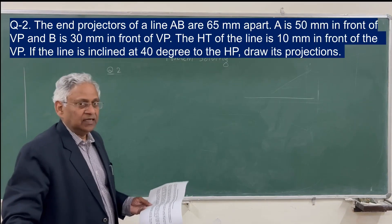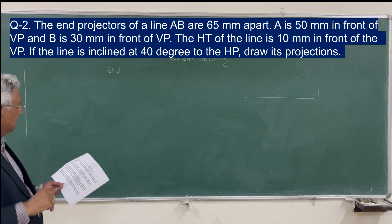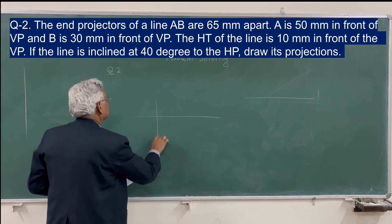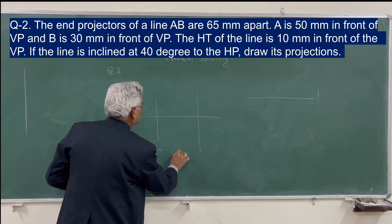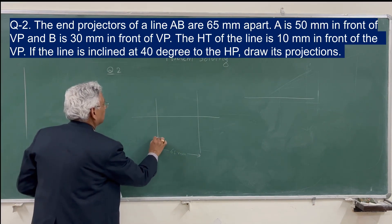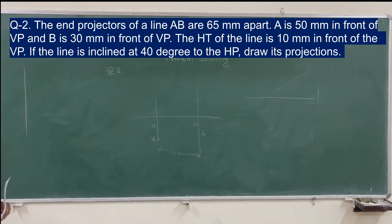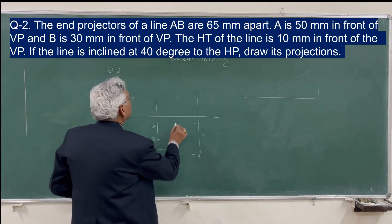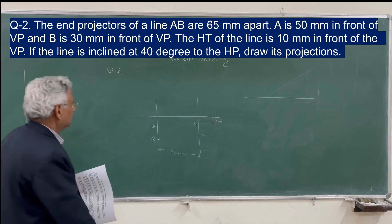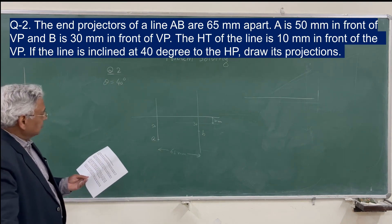Now, question number 2. The end projectors of a line AB are 65 mm apart. A is 50 mm in front of the vertical plane, and B is 30 mm in front of the vertical plane. The line makes 40 degrees to the horizontal plane. Draw the projections of the line.